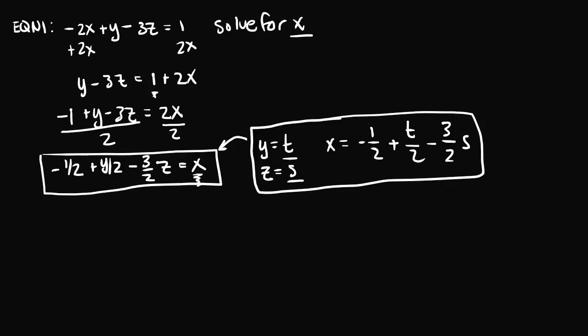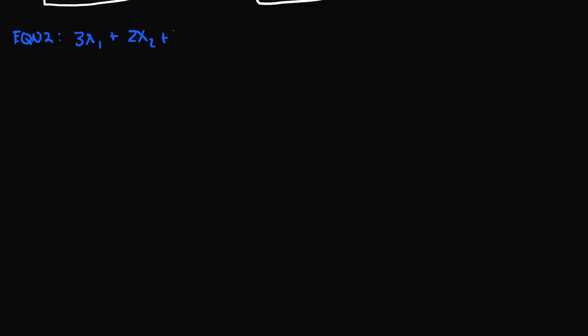Let's do a second example. Equation 2 is 3 times x₁ plus 2 times x₂ plus x₃ is equal to 0. We have one equation with three different variables: x₁, x₂, and x₃. Again, we can solve for one variable in terms of the other variables.